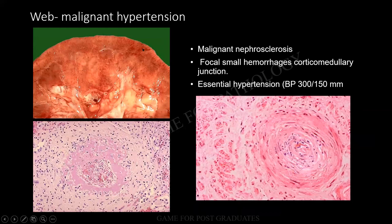In a malignant hypertension, there can be areas of hemorrhage. But beyond that, there can be two histological findings. There is a peri-arteriolar onion skin appearance. Or in some cases, there can be a fibrinoid necrosis. And there will be areas of hemorrhage. Look at this one beautifully at the corticomedullary junction — there are areas of hemorrhage. And essential hypertension or malignant hypertension is 300 by 150 millimeters of mercury.